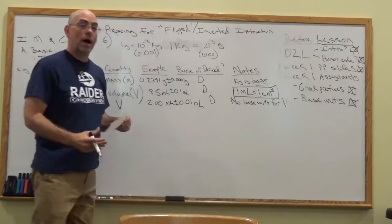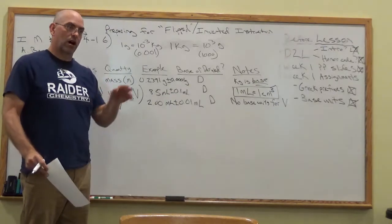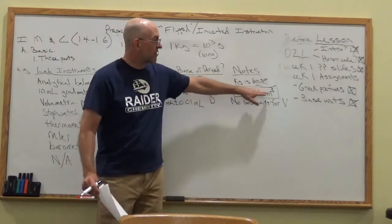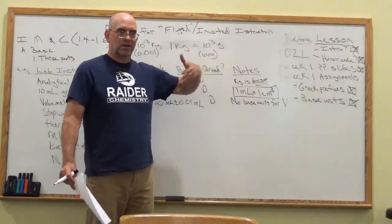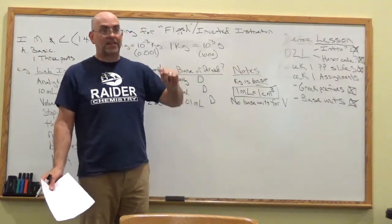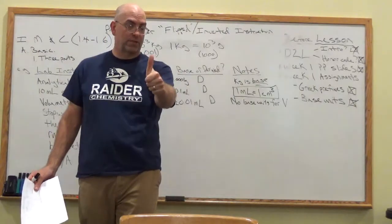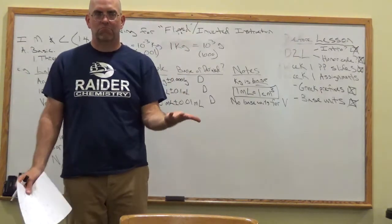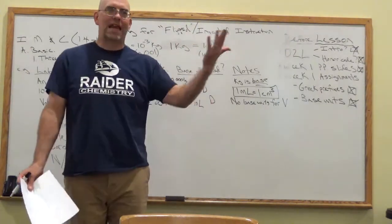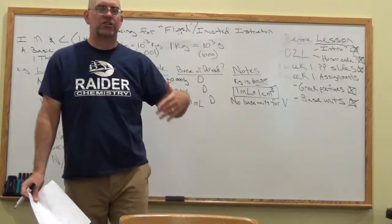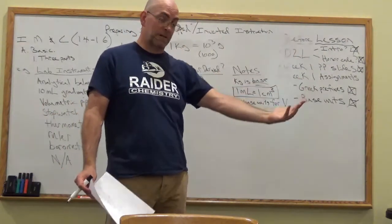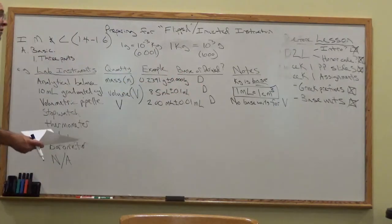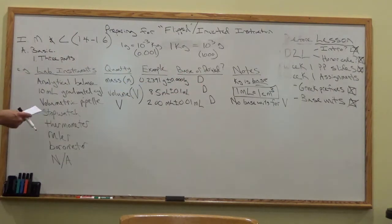There are no base units for volume, which seems strange. Why wouldn't we have a standard volume? Well, volume is a three-dimensional measurement. We have a base unit for a one-dimensional measurement — length — and everything else is based on that. You go from length in meters to area in square meters to volume in cubic meters. So the base unit is one-dimensional rather than three-dimensional.